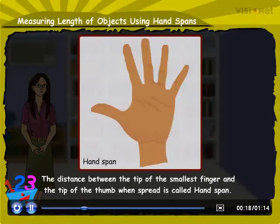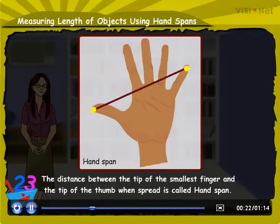The distance between the tip of the smallest finger and the tip of the thumb when spread is called a hand span.